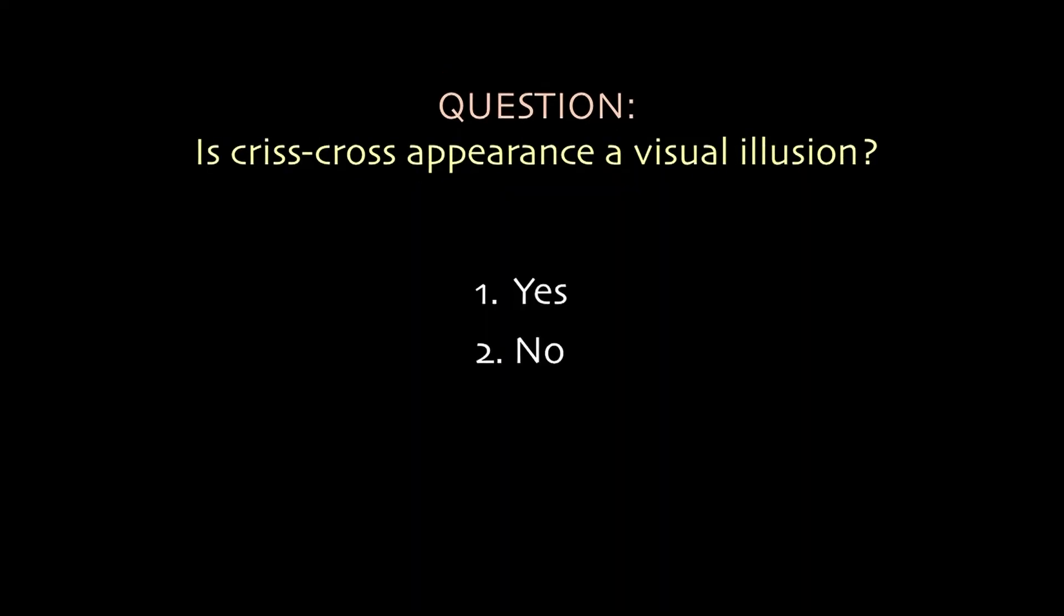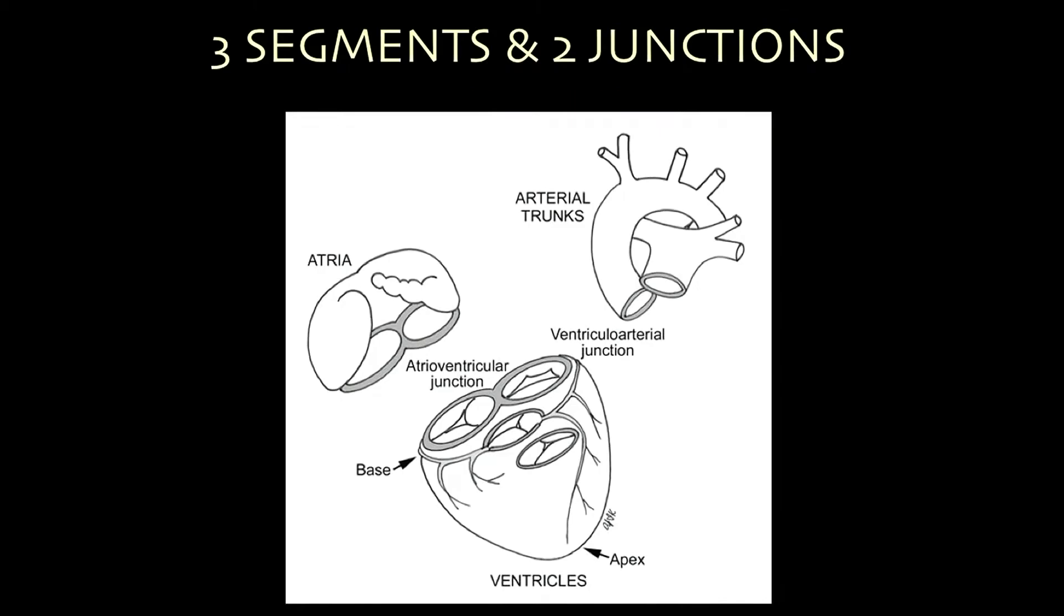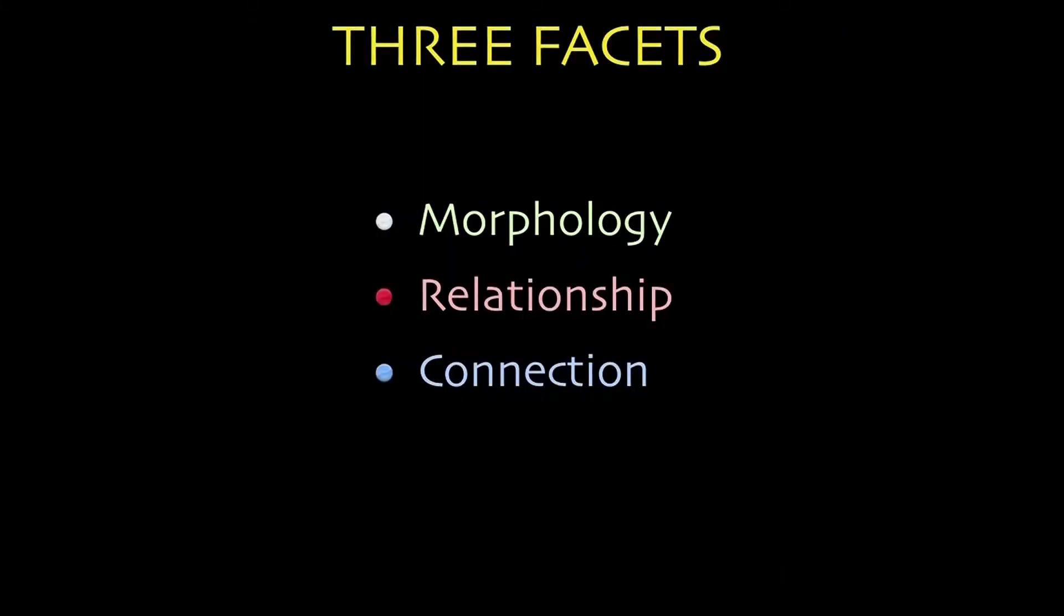And then is criss-cross appearance a visual illusion? As Dr. Van Praagh a long time ago said, criss-cross is not real, it is a visual illusion only. So let's think about the segmental approach. The heart consists of three segments and two junctions which connects the segments. Fundamentally important, which was introduced by Michael Tynan in 1979, when congenital heart is seen, you need to look at three important aspects of construction of the heart, which includes morphology, relationship, and connection.